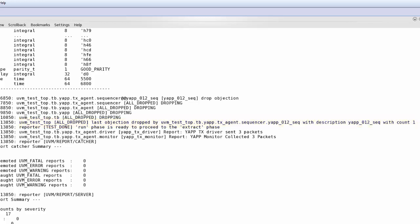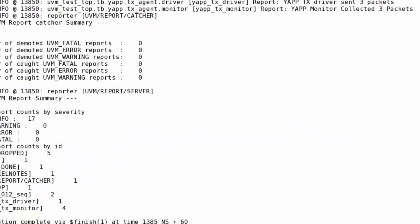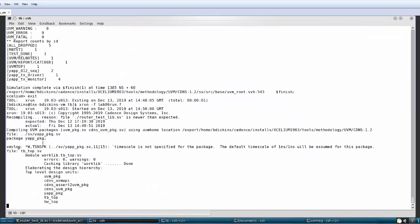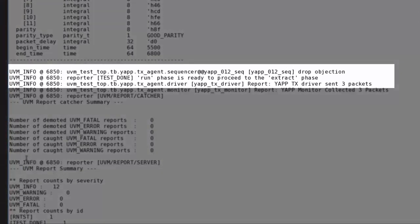If I modify this example to use the UVM 1.2 option to turn off objection propagation, which I do from the test class and rerun the simulation, the objection is no longer propagated to the components so that all_dropped implementations are not executed.